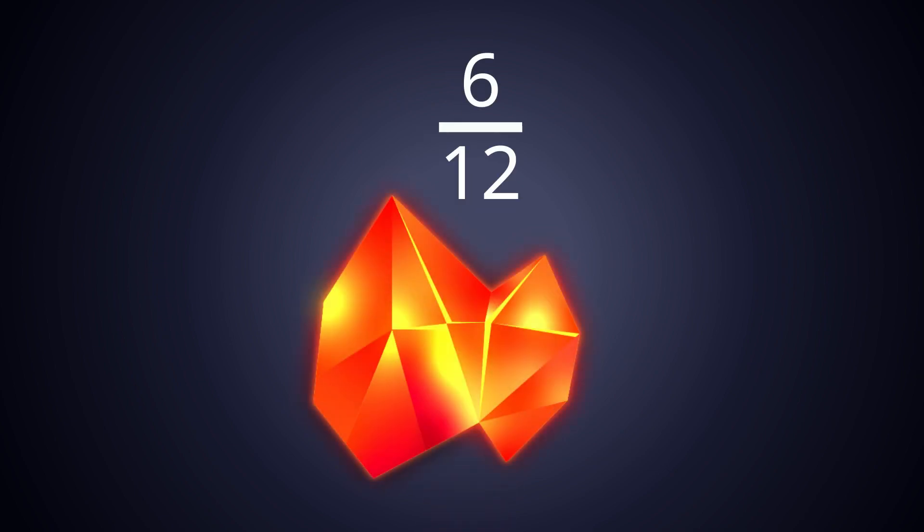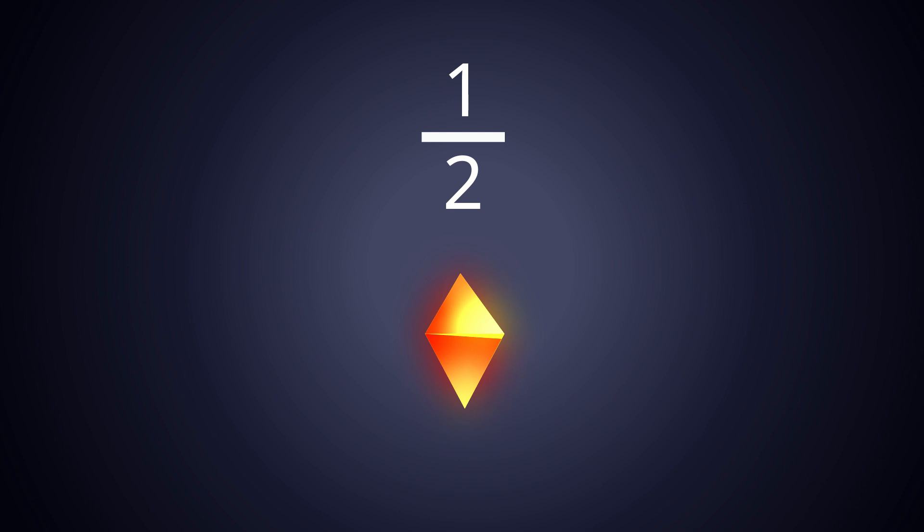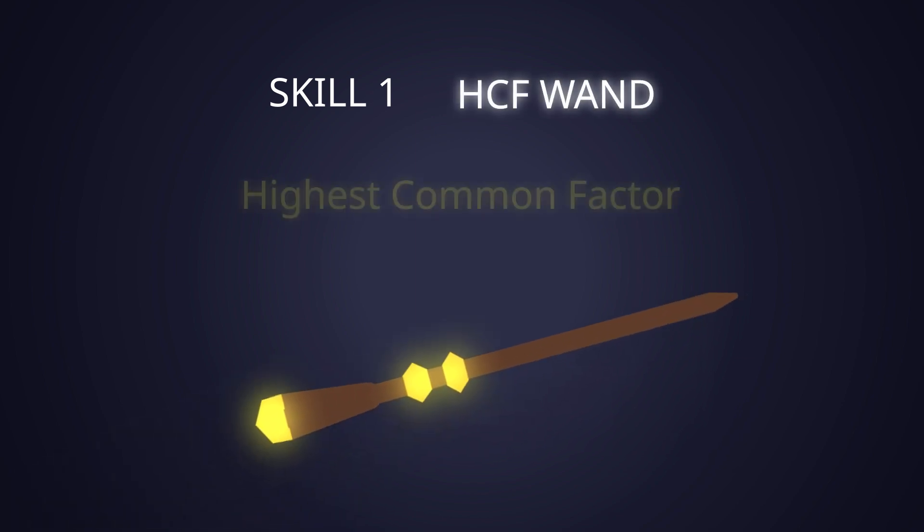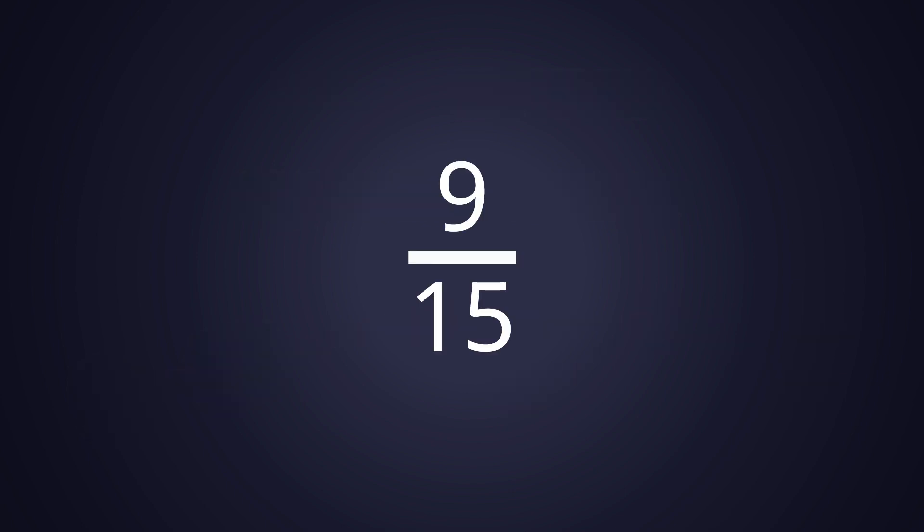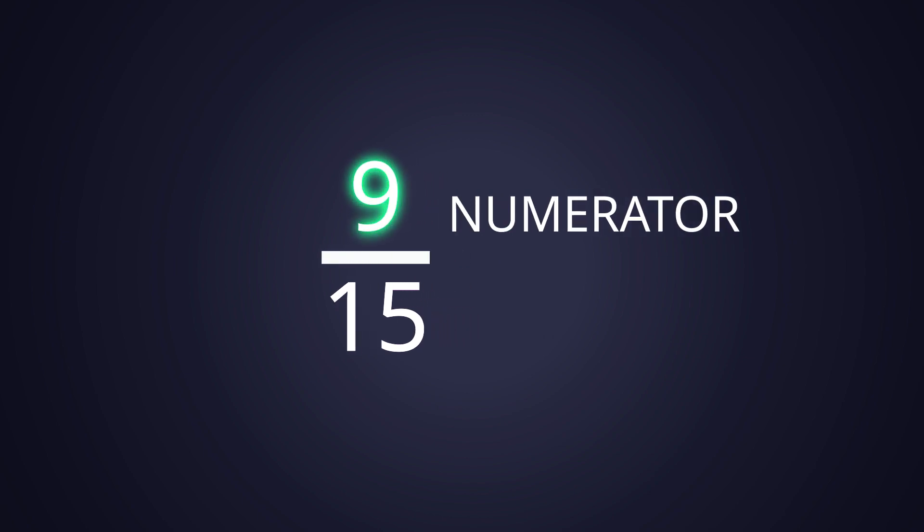Let's start with Magic Math Skill 1: The HCF Wand. Your magic wand for this mission is called the Highest Common Factor (HCF). It's a powerful tool that finds the biggest number that can magically divide both the top number (the numerator) and the bottom number (the denominator) of a fraction.